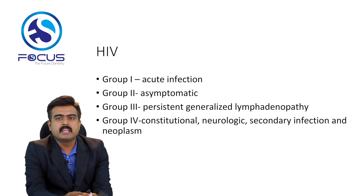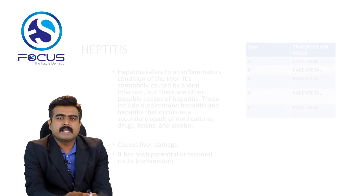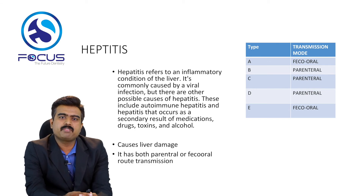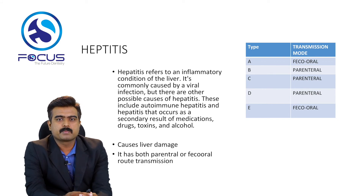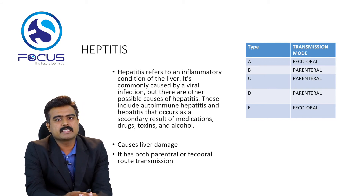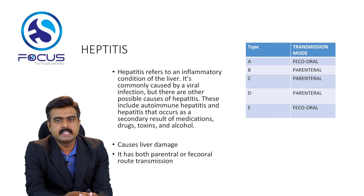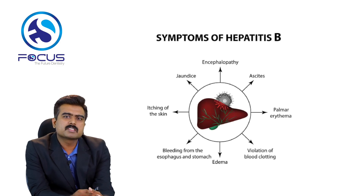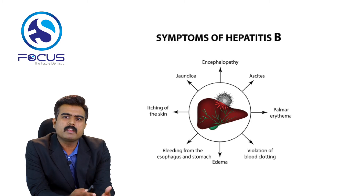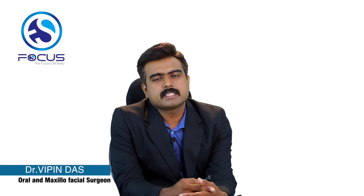Clinical features of HIV include fever, lymphadenopathy, and candidiasis. The next topic is hepatitis, which refers to an inflammatory condition of the liver. It is commonly caused by viral infection, but other causes include drugs, toxins, alcohol, and medications. It causes liver damage and arthritis. Hepatitis has both parenteral and feco-oral routes of transmission. It is classified into types A, B, C, D, and E — types A and E are feco-oral, while B, C, and D are parenteral. Symptoms include itching, jaundice, encephalopathy, ascites, and palmar erythema.